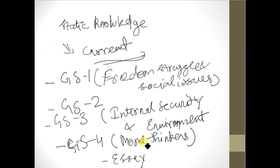Political science as an optional is a very good subject because it gives you an understanding of all the general studies papers. The syllabus is vast, as is all of UPSC, so we need to prepare concisely and practice previous year question papers. There cannot be any automatic system in political science — we need to work in a very chronological manner to understand each and every topic in a concise and subjective manner.